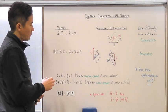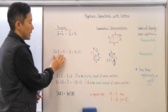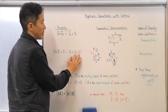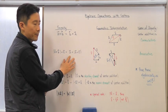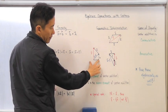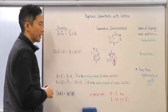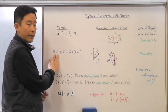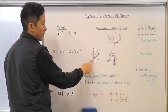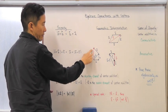The second property asks: is taking vector a plus vector b first, then adding vector c, the same as taking vector b plus vector c first, then adding vector a? Looking at the left-hand side, vector a plus vector b gives us the blue resultant vector. Then adding vector c takes us from the original starting point to the final endpoint — that is the resultant vector for the left side.